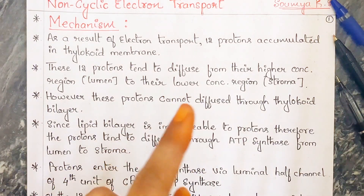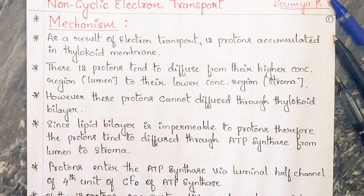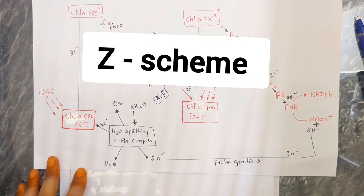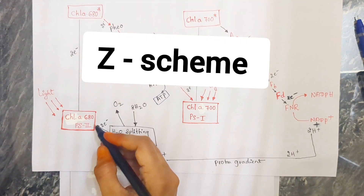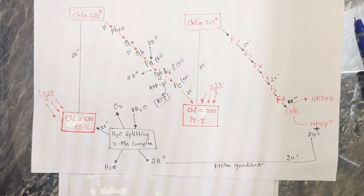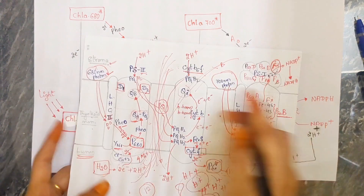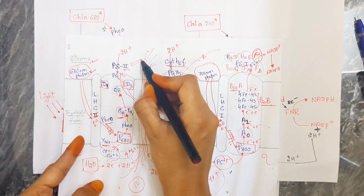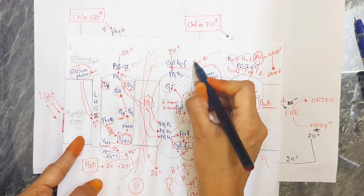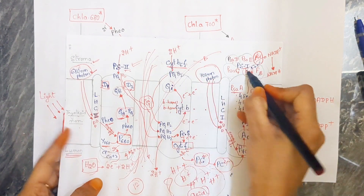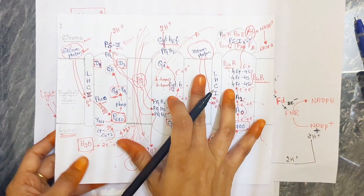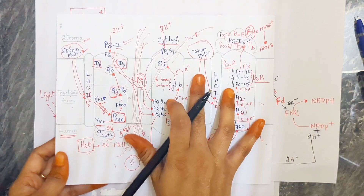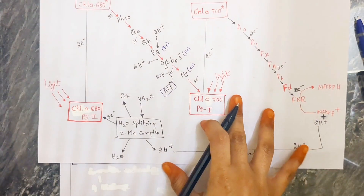It is also called the Z scheme. With this Z scheme, there are two photosystems involved in the non-cyclic electron transport system — that is photosystem 2, cytochrome B6F, and photosystem 1. These are all involved.